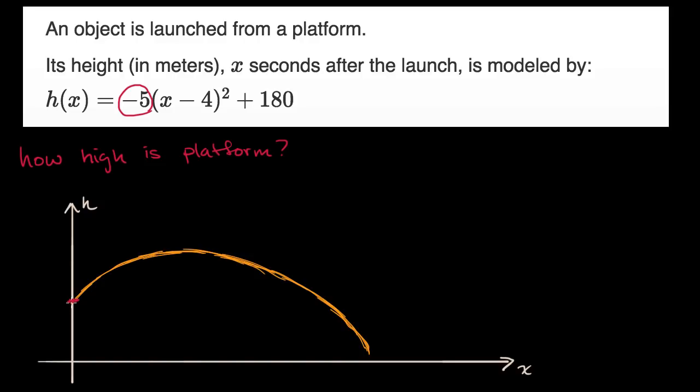Well, as you can see, we are at that value at time x equals zero. So to figure out how high is the platform, we essentially just have to evaluate h of zero. That's going to be negative five times negative four squared plus 180. Negative four squared is 16. Negative five times 16 is negative 80 plus 180. So this is going to be equal to 100. So the platform is 100 meters tall.